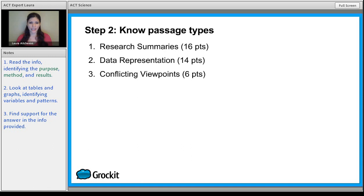There are seven passages altogether. Three of them are going to be research summaries. Three of them are going to be data representation. And one is going to be conflicting viewpoints. There are a few more questions in research summaries passages than there are in data representation overall. So that's why there are 16 points versus 14 points.